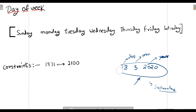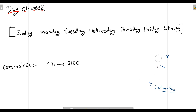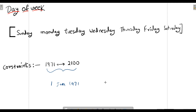One more thing given as a constraint in the question: the date we receive will lie between a specific interval. It can start from 1 January 1971, and the latest date we can get is 31 December 2100. So the date will always lie within this interval.